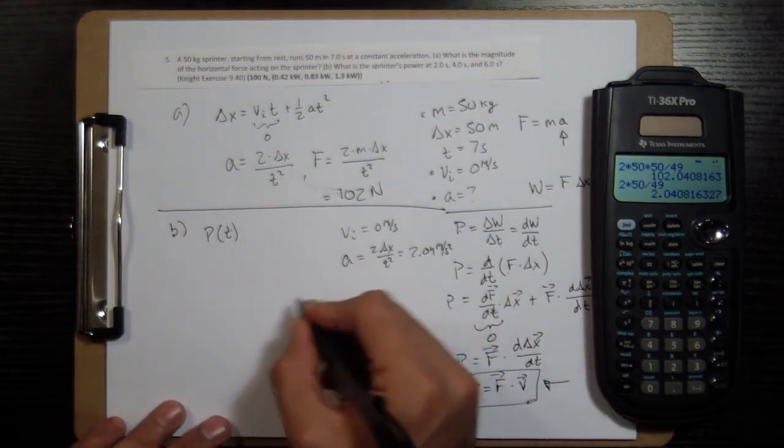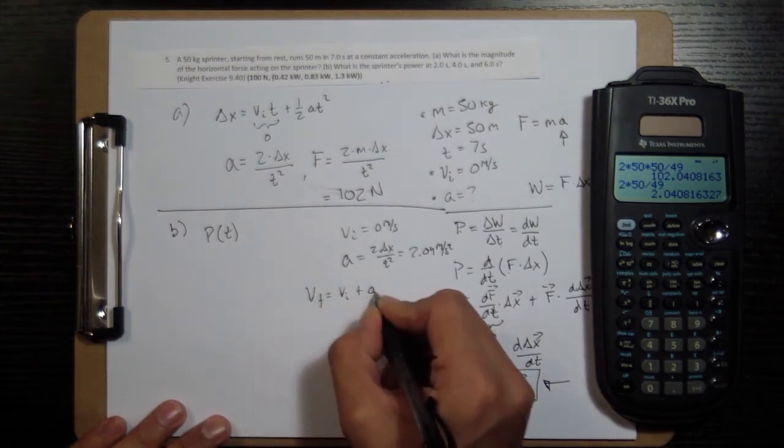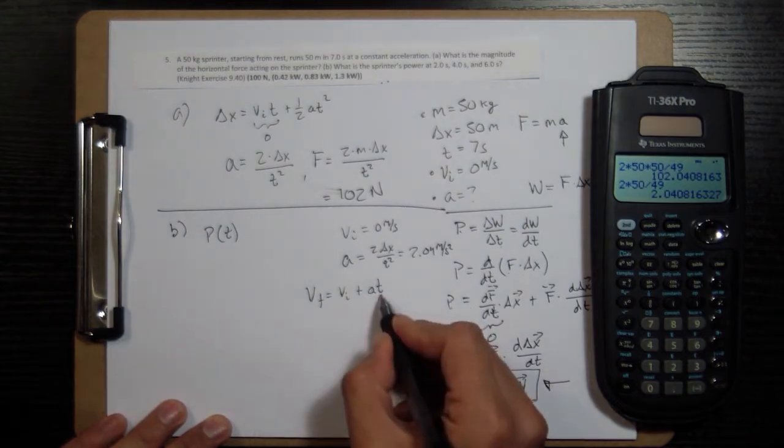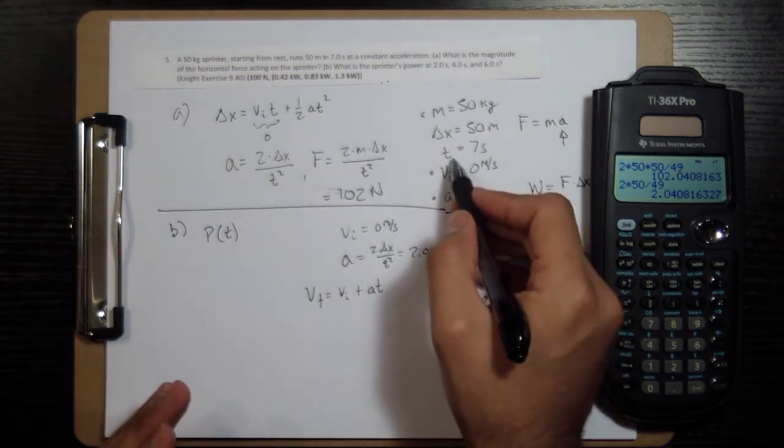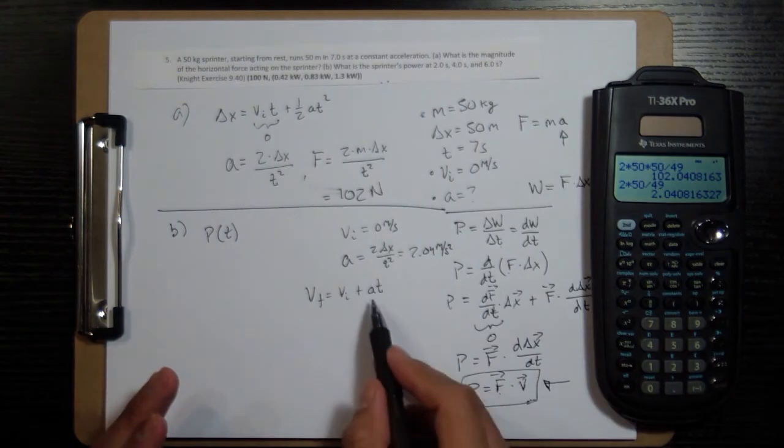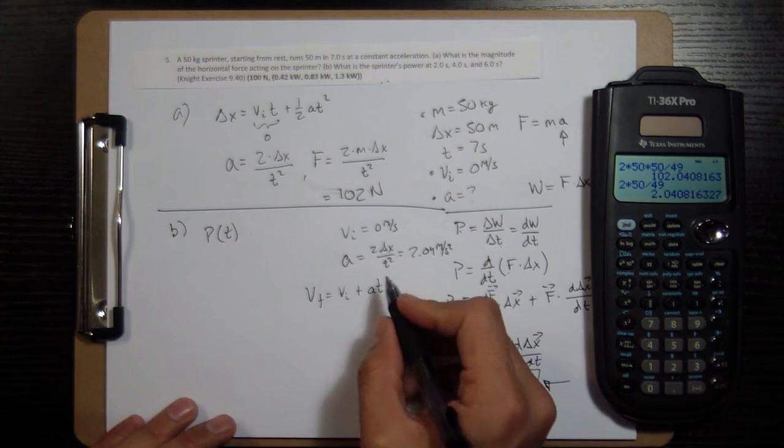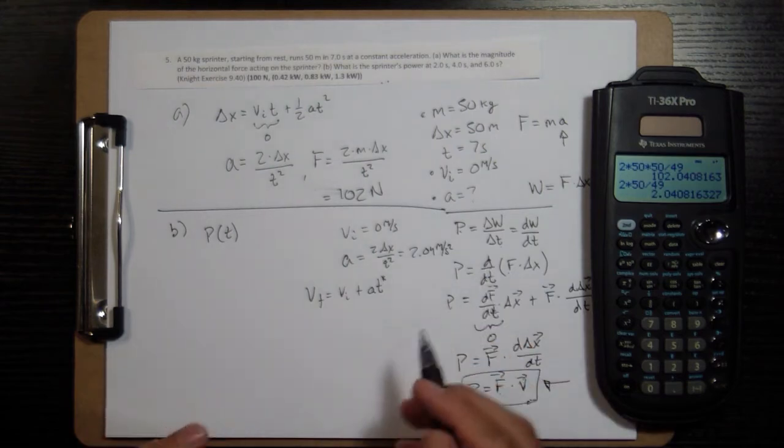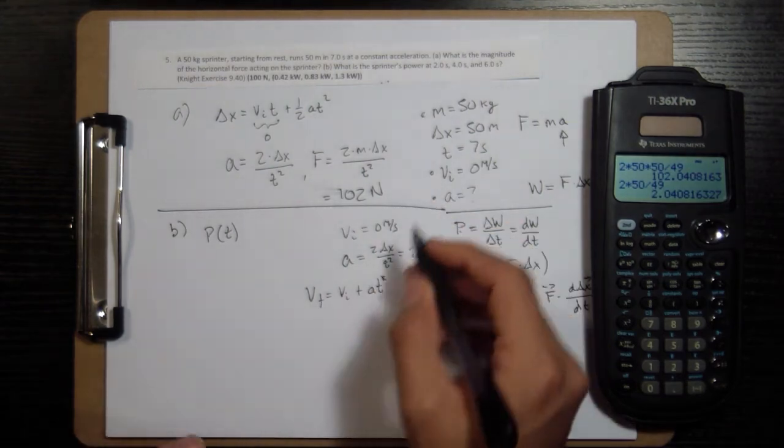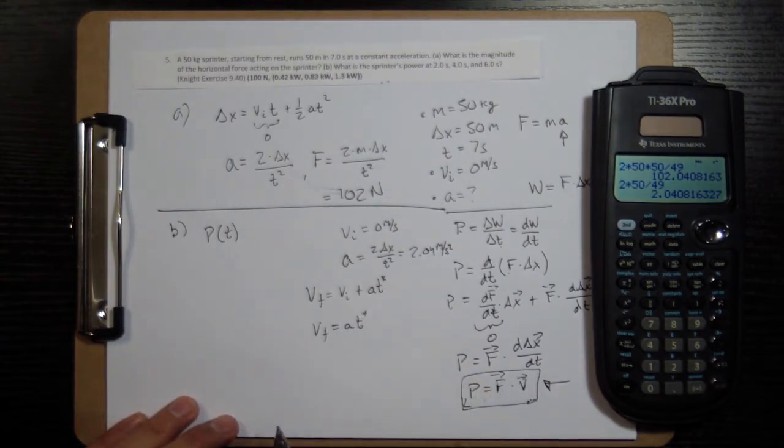Well, we have an equation for that from the kinematic equation, which is that the velocity final is equal to the initial velocity plus acceleration times time. This time is not the same as this time because this is the whole time that he's accelerating, but this is a time from 0 to 2 seconds to 4 seconds to 6 seconds. So don't be confused there. I might have to put a little star or something, but that's not the same as this one. So, since vi is 0, v final equals at star, and we can just use that for the velocity here.